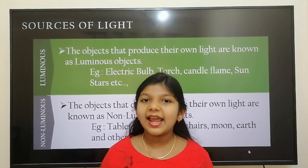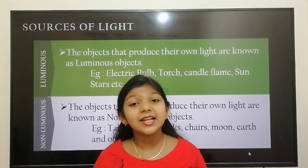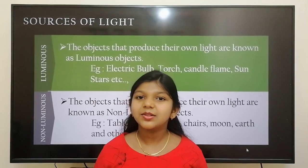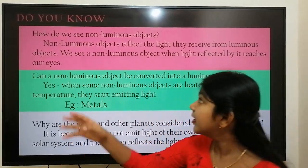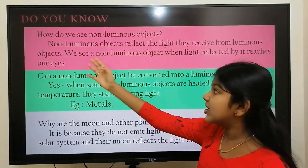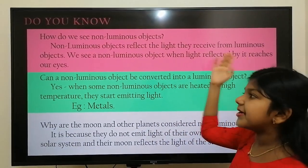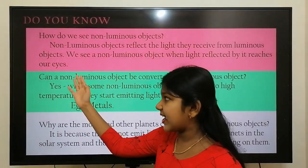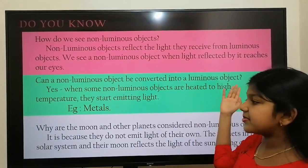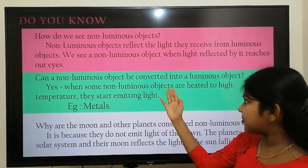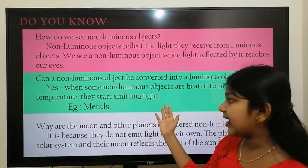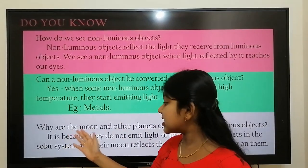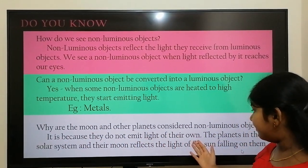Objects that emit light of their own are known as luminous objects — for example, the sun, stars, electric bulb, and torch. Objects that do not emit light of their own are known as non-luminous objects — for example, a table, chair, sofa, the earth, the moon, and other planets. Non-luminous objects reflect the light they receive from luminous objects, and we see them when that reflected light reaches our eyes. Some non-luminous objects, when heated to high temperatures, start emitting light — for example, metals. The moon and other planets are non-luminous because they only reflect the sun's light.